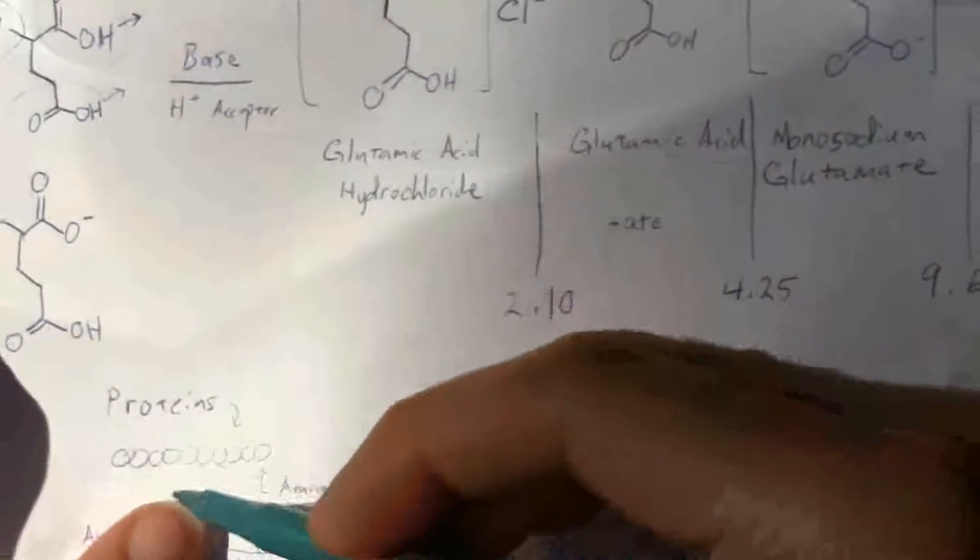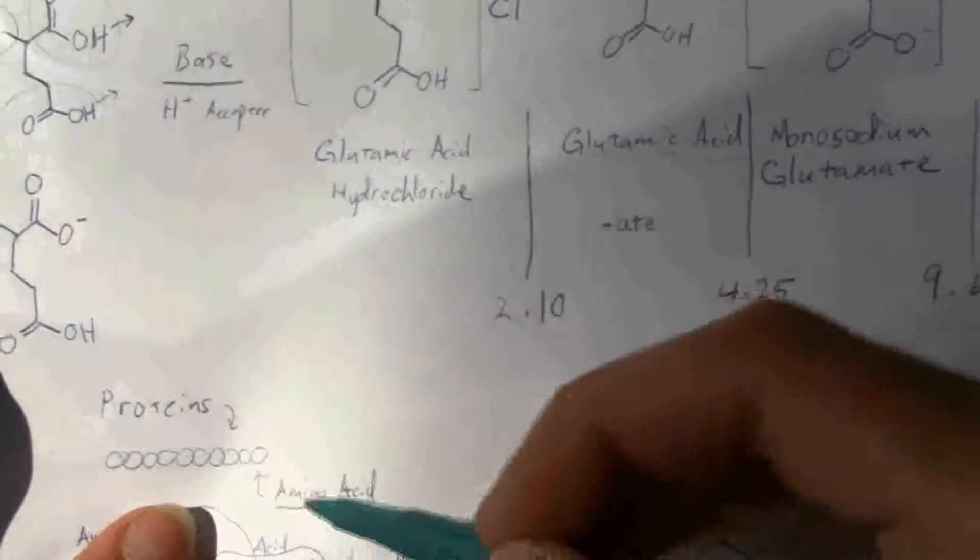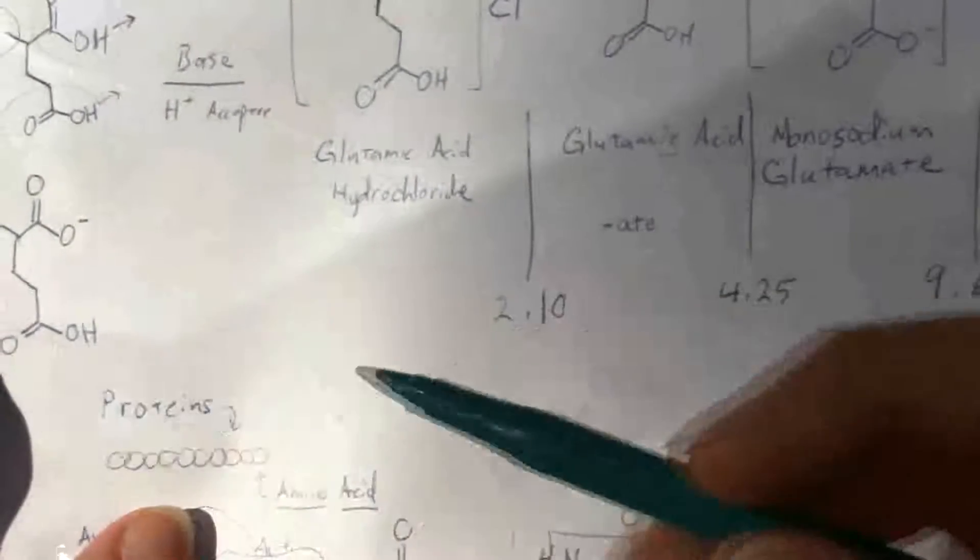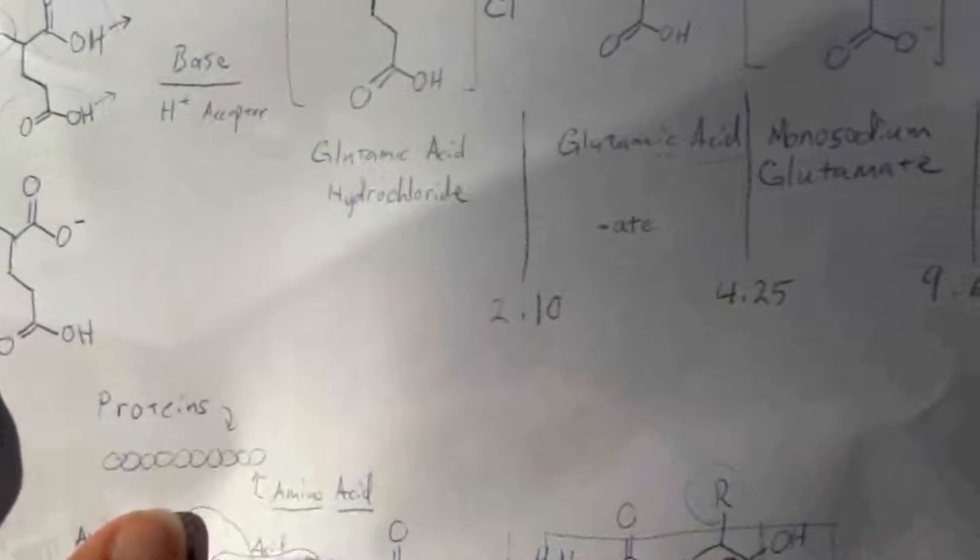When it gets digested, it breaks up that chain into the amino acids and so you'll have glutamic acid.